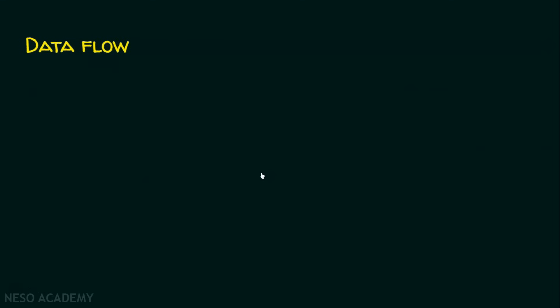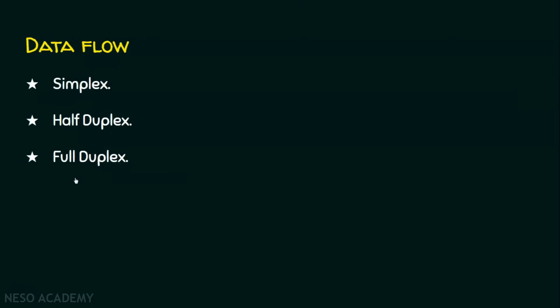Data flow means the data is going to flow from one node to another node. And there are three different flows: simplex, half duplex, and full duplex. We shall see all these three data flows in detail.